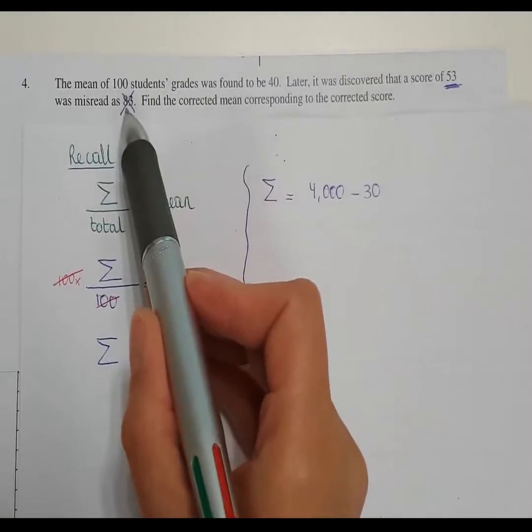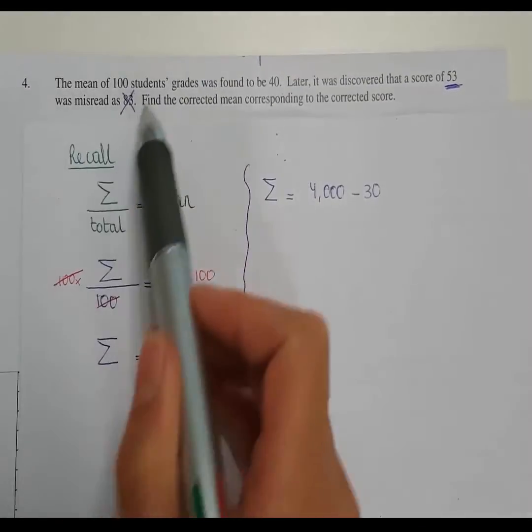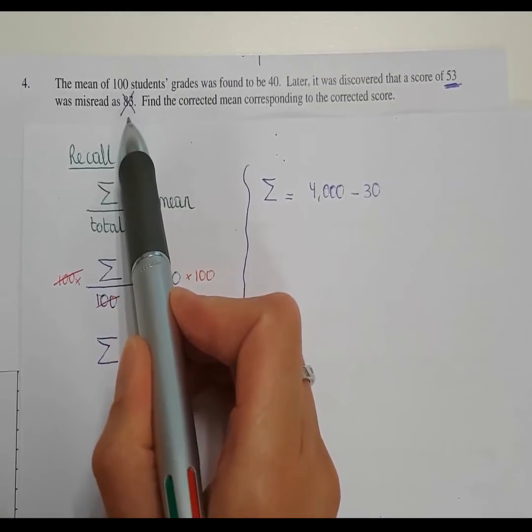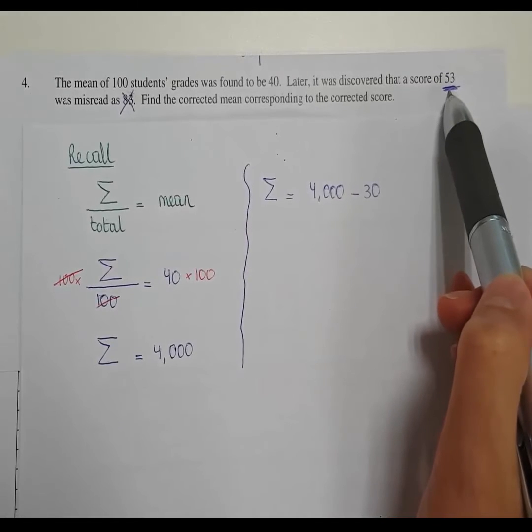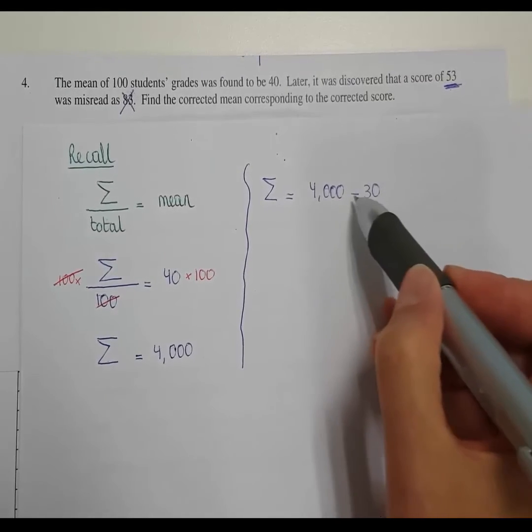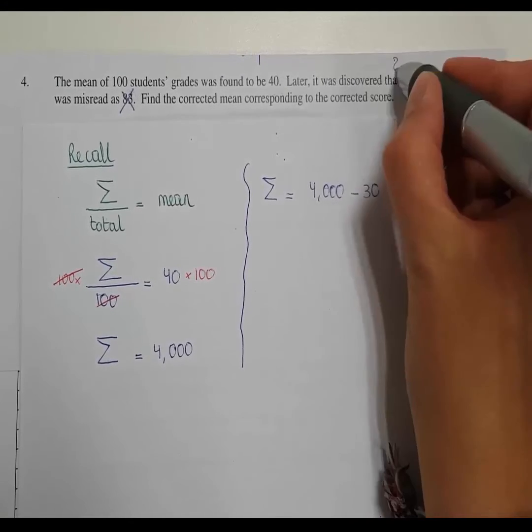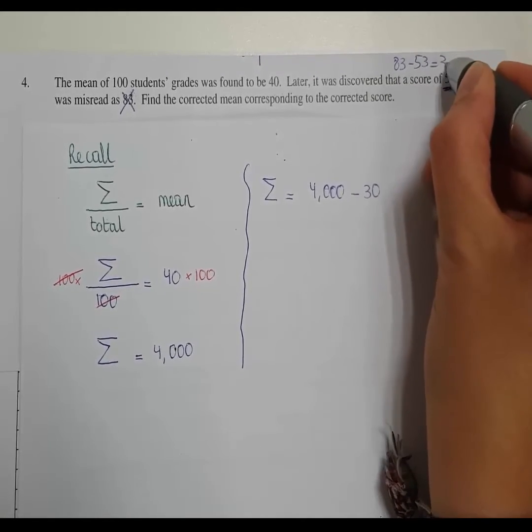We need to subtract 30 from it. Once more, why do we have to subtract 30? Because we added a score of 83 and it was supposed to be 53. So that means we have to subtract 30. 83 minus 53 equals 30.